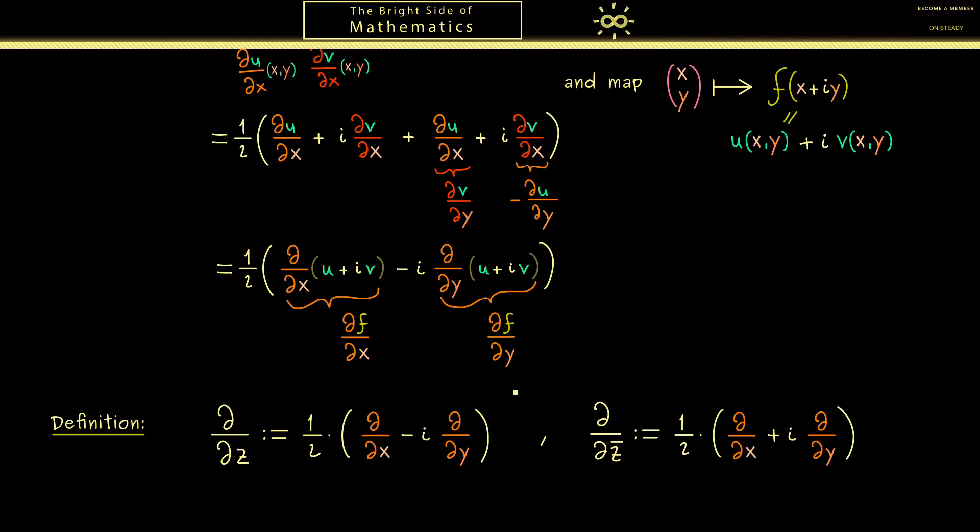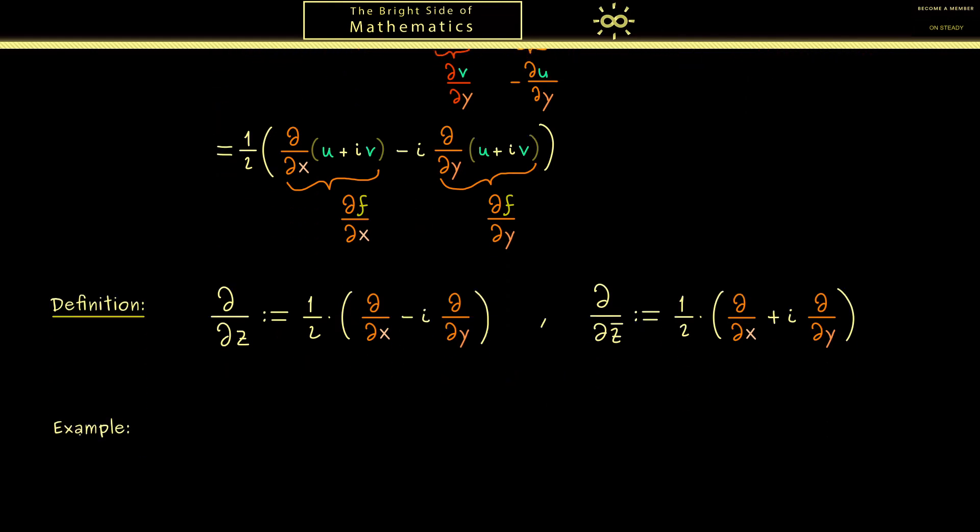Then as promised let's look at an example. It shouldn't be a complicated one so let's look at a polynomial. Namely we just look at the quadratic function z squared, which means using x and y we have (x plus iy) squared. Hence let's just expand the square which means we have x² minus y² plus i times 2xy.